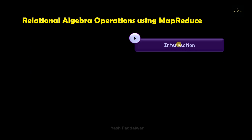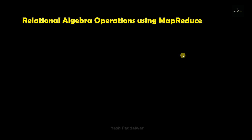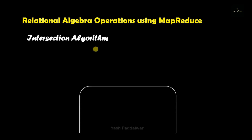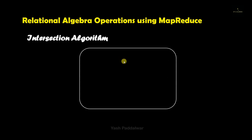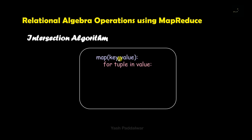Now in this video we will be specifically seeing the intersection operation at a glance. Let me first tell what intersection means: if we have two tables and some of the records between those two tables are the same, then the records that are common in both tables is the output of the intersection operation. Now let's have a look at the algorithm that MapReduce uses for performing this particular operation.